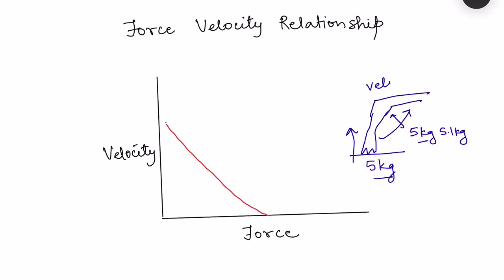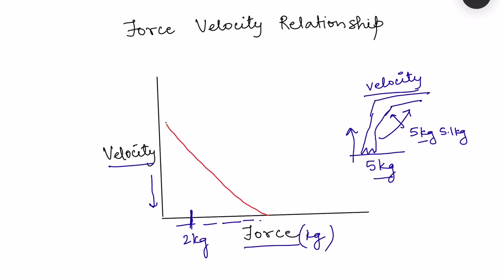When the muscle shortens, there is a particular velocity by which it shortens. Now there is a relationship between the force which we are lifting and the velocity of shortening. As the force increases, there is a decrease in the velocity. The x-axis shows force in kg and the y-axis shows velocity of shortening. At 2 kg, the velocity of shortening is higher, and if force is increased to 5 kg, the velocity of shortening has decreased. From day-to-day experience, if the load is heavy, the velocity by which our hand bends or shortens is lesser.